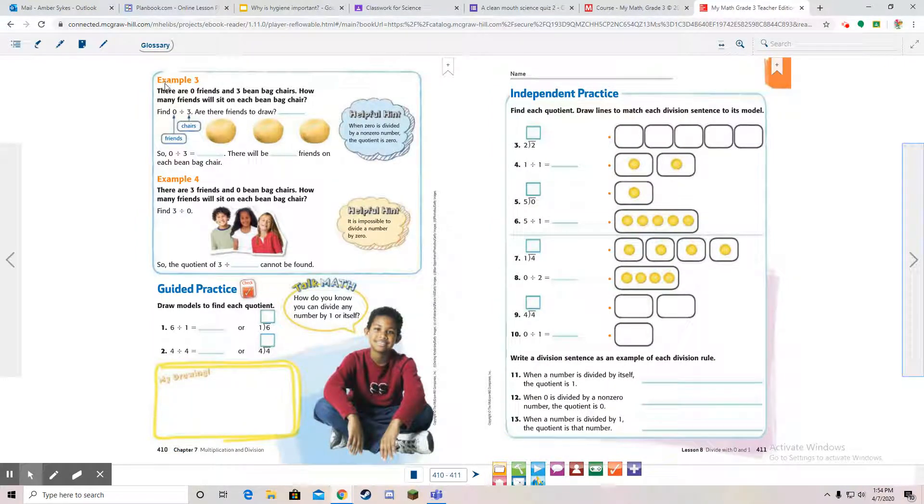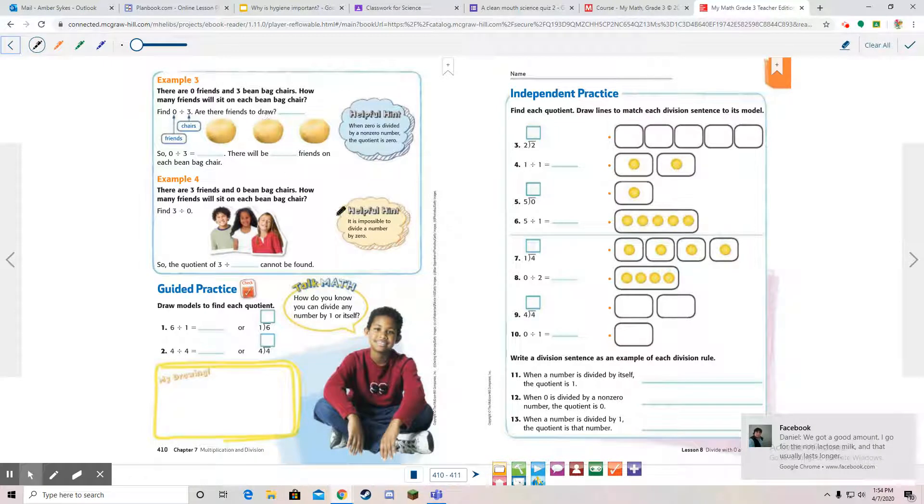Zero divided by three. There are zero friends and three chairs. How many friends will sit on each chair? Let's think about it. There are no friends here, but there are three chairs. If there are no friends, there's nothing to divide out. The answer is just zero. Zero divided by three is zero. There will be no friends on the chairs.